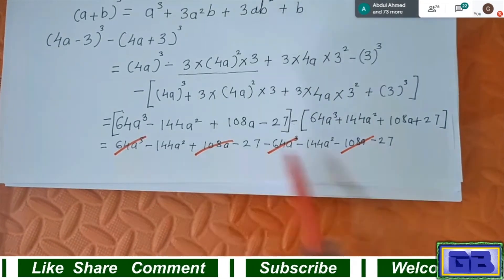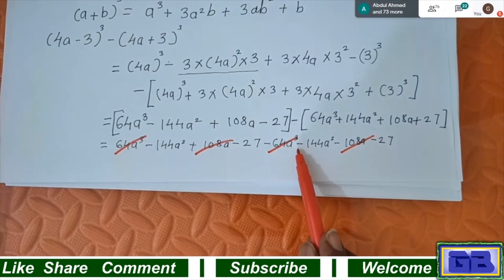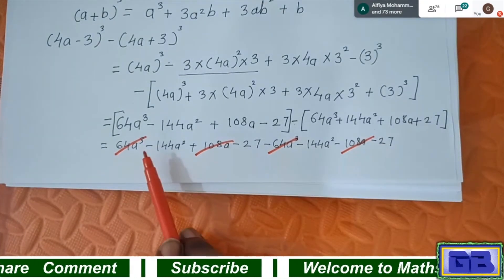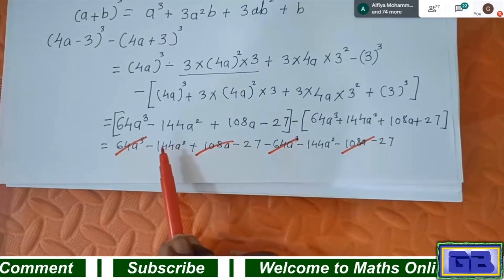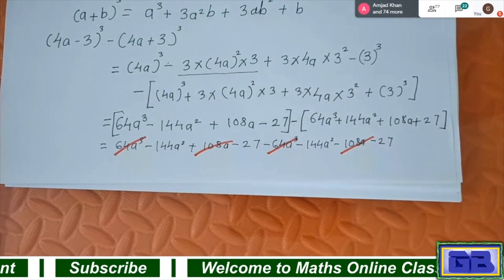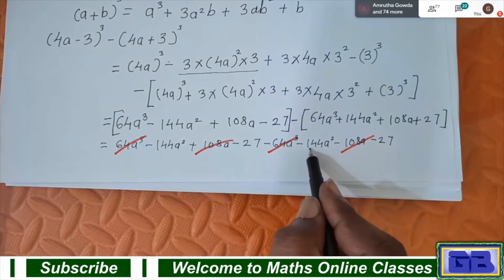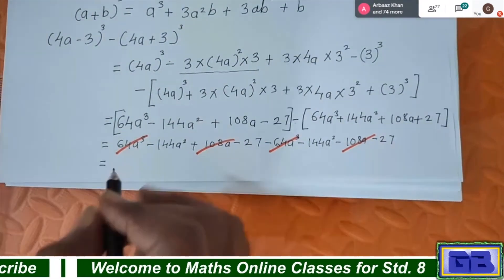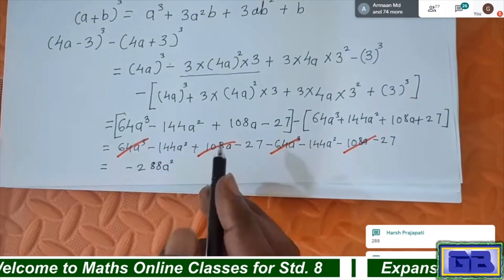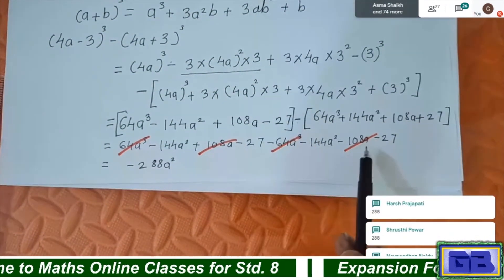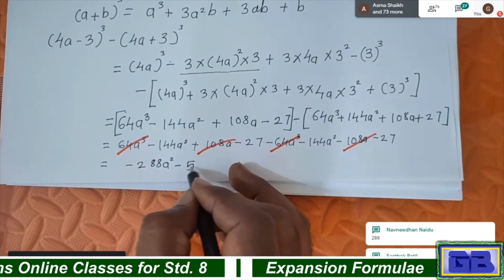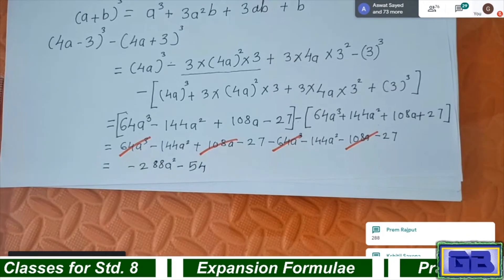The remaining terms: minus 144a² and minus 144a² are both negative, so add them: 144 + 144 = 288, giving minus 288a². Then minus 27 and minus 27 gives minus 54. Final answer: minus 288a² - 54.